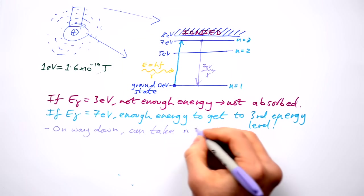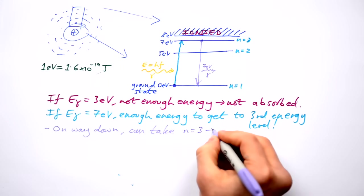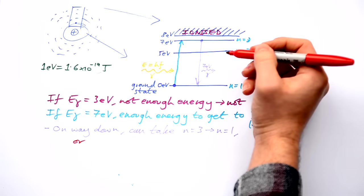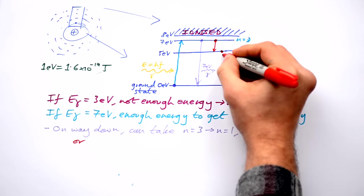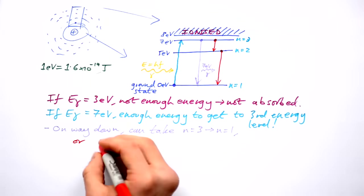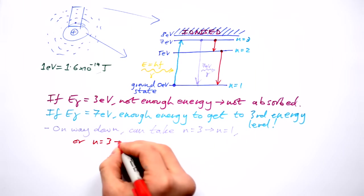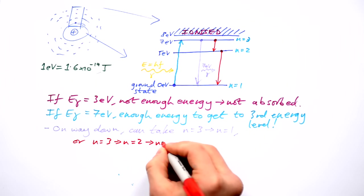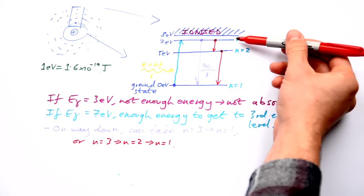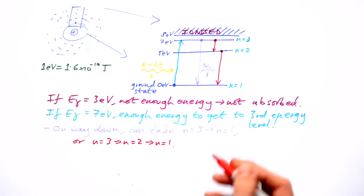So we can go from n three to n one, or it can stop halfway. It can go to here and then down to here. So it's gone from n equals three to n equals two to n equals one. So it's gone from the third energy level to the second and then back to the ground state there.